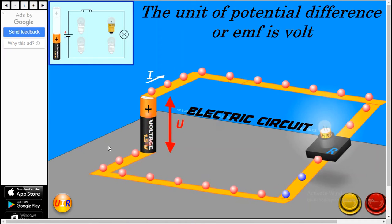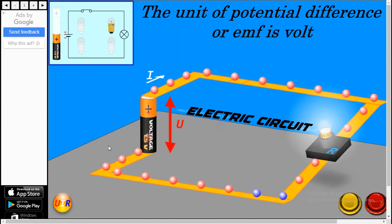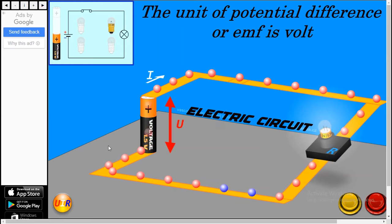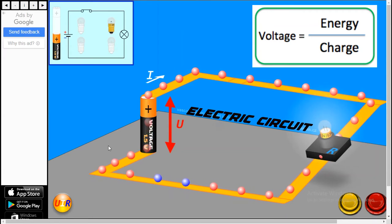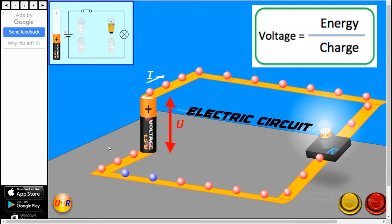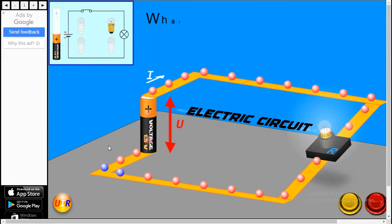The unit of potential difference or EMF is volt. That is the unit and you can see the formula on the screen itself. This is how you can find out the voltage.